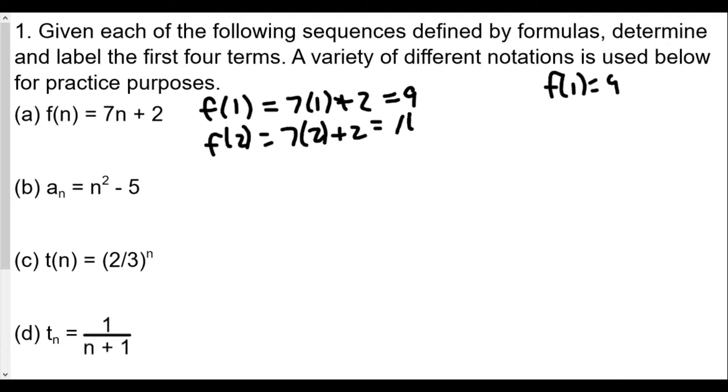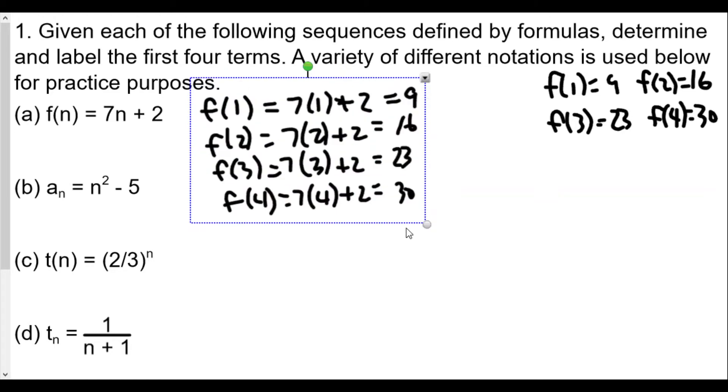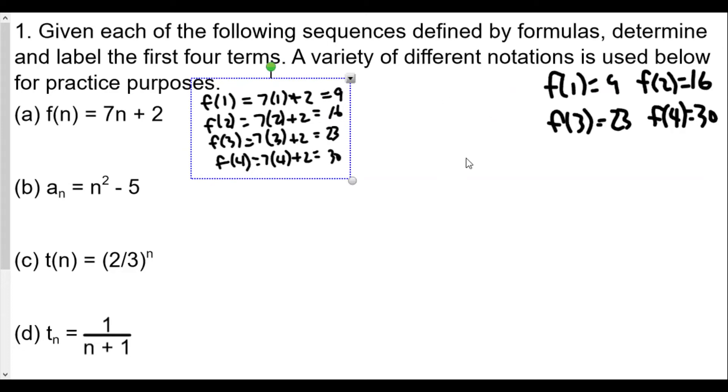Then we'll have f(3), which is 7 times 3 plus 2, which equals 23. f(4) equals 7 times 4 plus 2, that's 28 plus 2, which is 30. So f(4) equals 30. We see in this case it's just like a function: f(1) is 9, f(2) is 16, f(3) is 23, f(4) is 30.